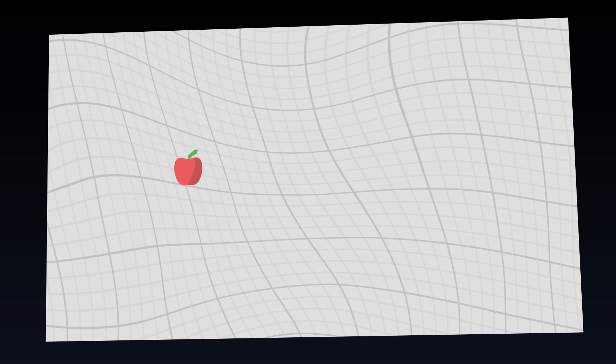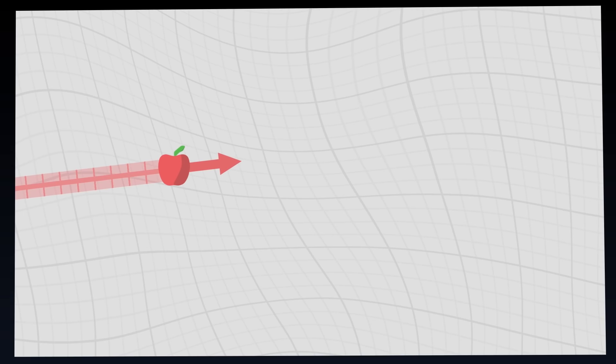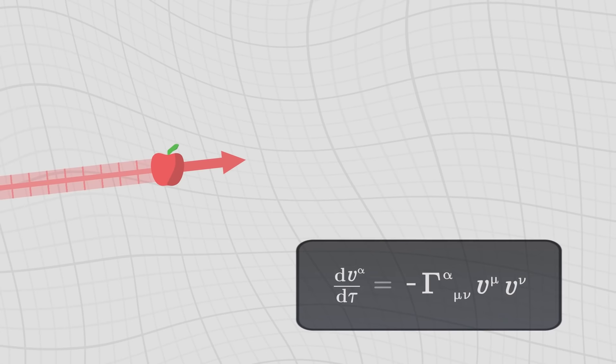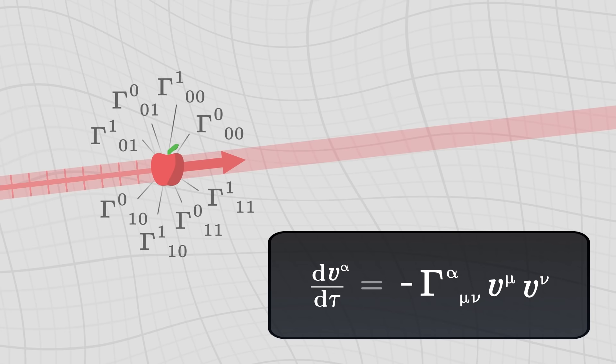Our model is getting more and more precise. We have built a coordinate system to describe the position of objects. We have defined proper time in order to interpret world lines as movements through space-time. And we have obtained a fundamental equation, the geodesic equation, which predicts the trajectory of objects as long as we know the Christoffel symbols.